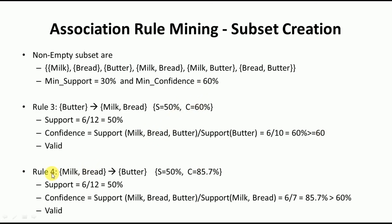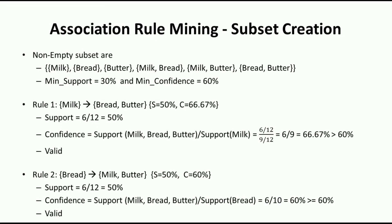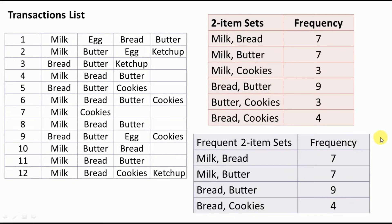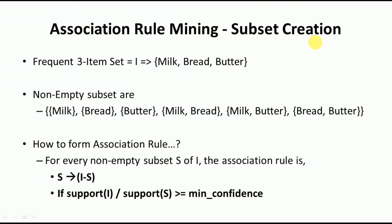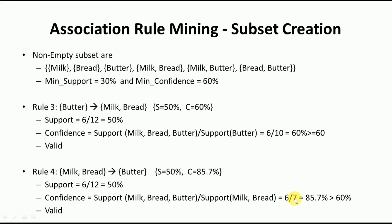For Rule 4, S = milk-bread, the rule is: milk-bread → butter. Support is 50 percent. Milk-bread appears 7 times, so confidence = 6 divided by 7 = 85.7 percent, well above the 60 percent minimum confidence. This is a valid rule.